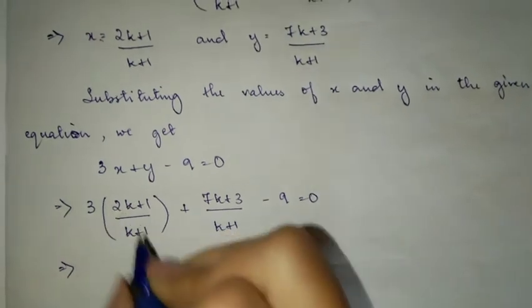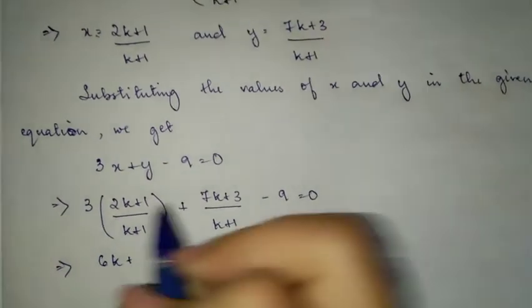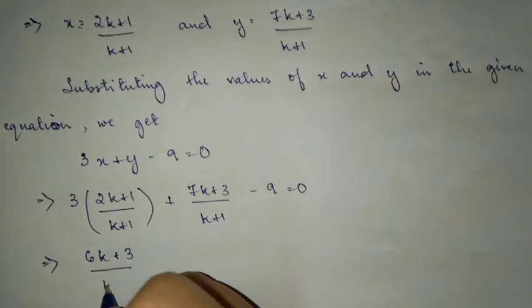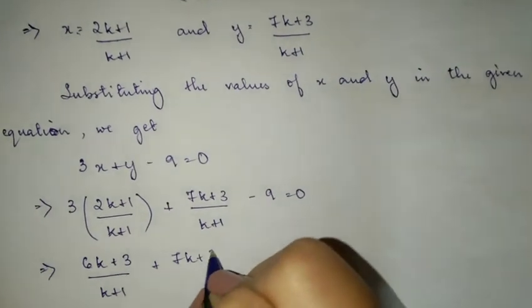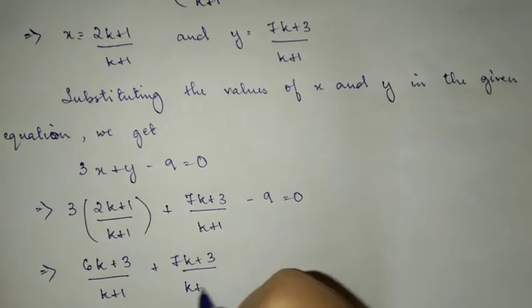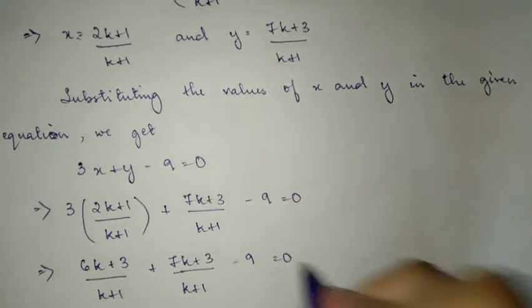Opening the brackets: 3 times (2k + 1) gives (6k + 3). So we have (6k + 3)/(k + 1) plus (7k + 3)/(k + 1) minus 9 equals 0.